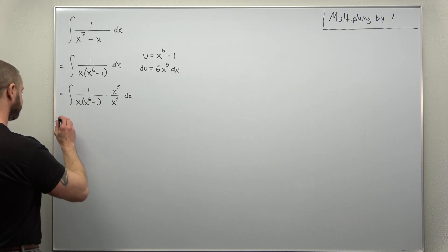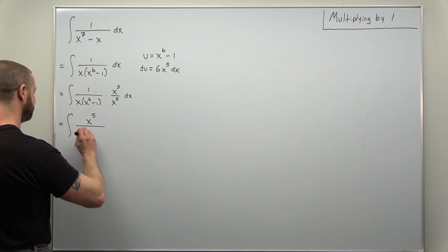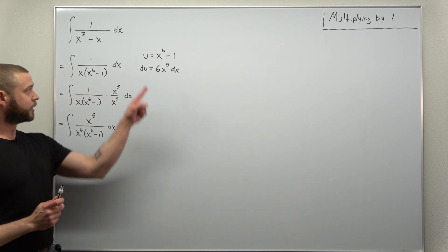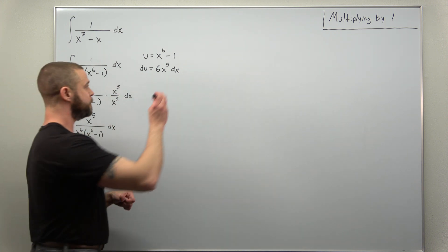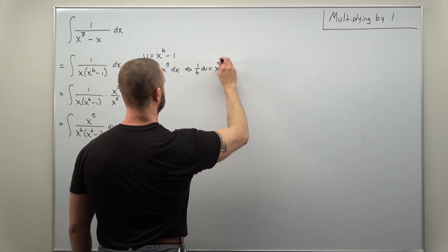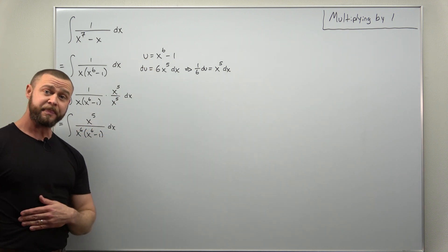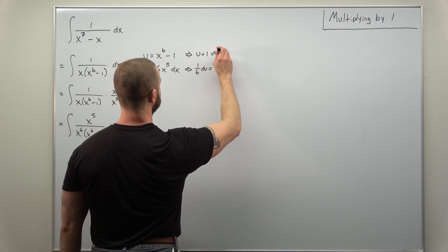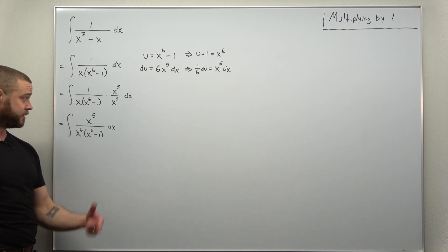Now if I take that x⁵ and multiply it to the x in the front, we'll write this fraction as x⁵ divided by x⁶ times (x⁶ minus one). Now we actually can use our substitution. The x⁵ will be used for du, so we can divide the six over and manipulate the differential to get (1/6) du equals x⁵ dx. Notice you can also solve for x⁶ from the substitution: add one to get u plus one equals x⁶.